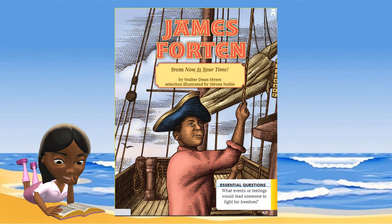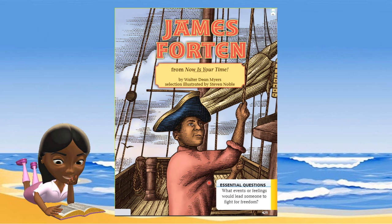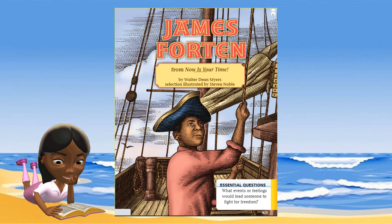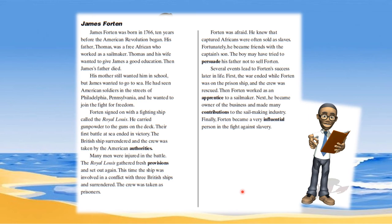Our story title is James Fortin: From Now Is Your Time. The author is Walter Dean Myers and the selection was illustrated by Stephen Noble. Essential question: what events or feelings would lead someone to fight for freedom? You can pause this video to think about your answer and prepare for a writing activity in class. The entire story is available in e-resources in the EIS portal, and I will be sending you a link to the read-aloud on YouTube.